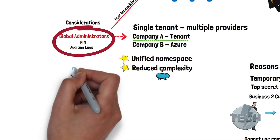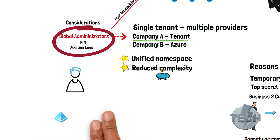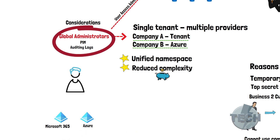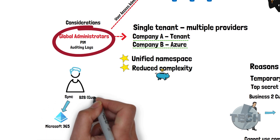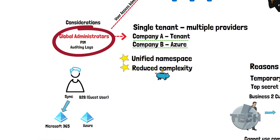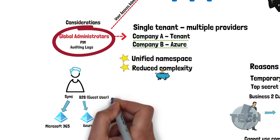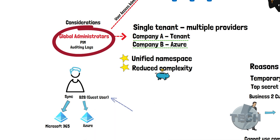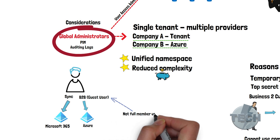A user can only be synced to one tenant. If you have one tenant for Microsoft 365 with workplace services and one tenant for Azure, then in Azure you would have to use B2B — business-to-business users — which are flagged as guest users in your Azure tenant. You may run into limitations that normal users would not have, as guest users are not the same as normal users and there are certain differences between those.